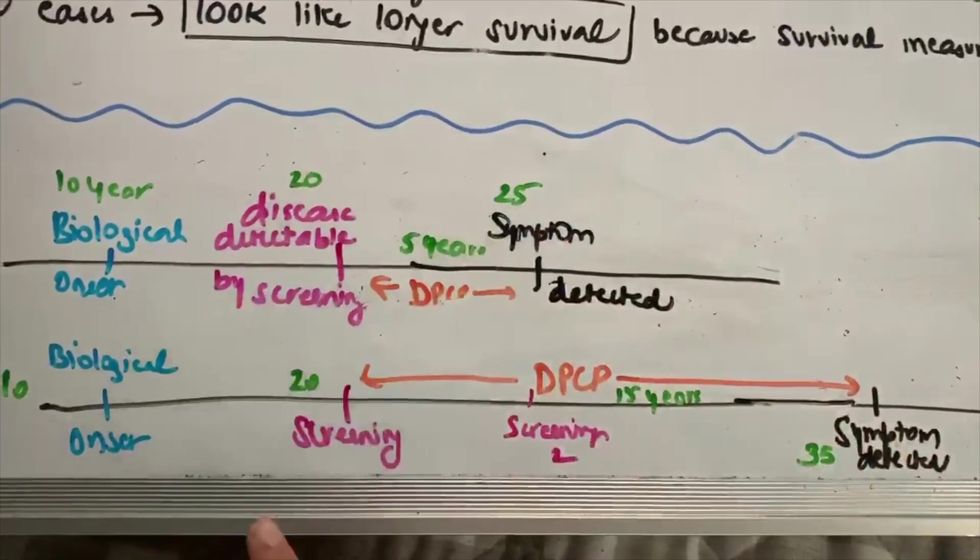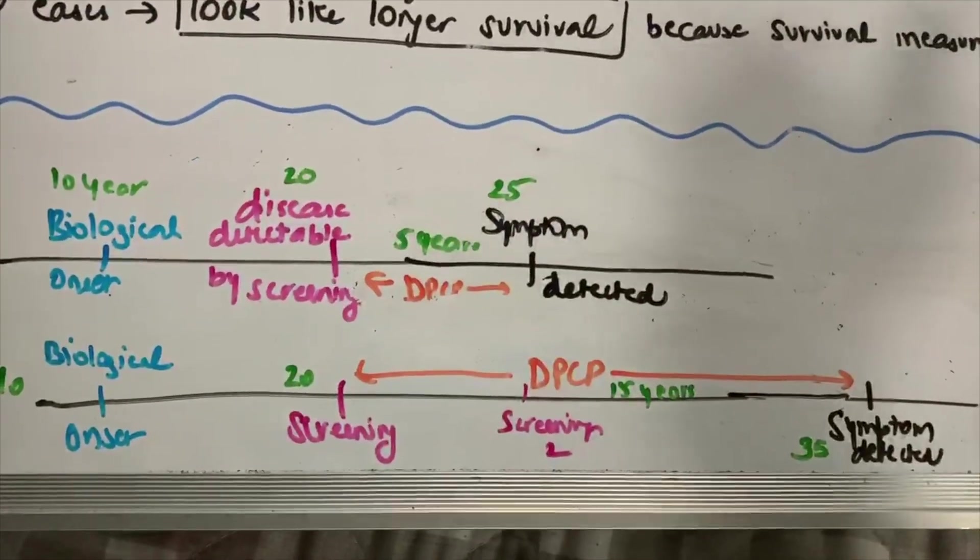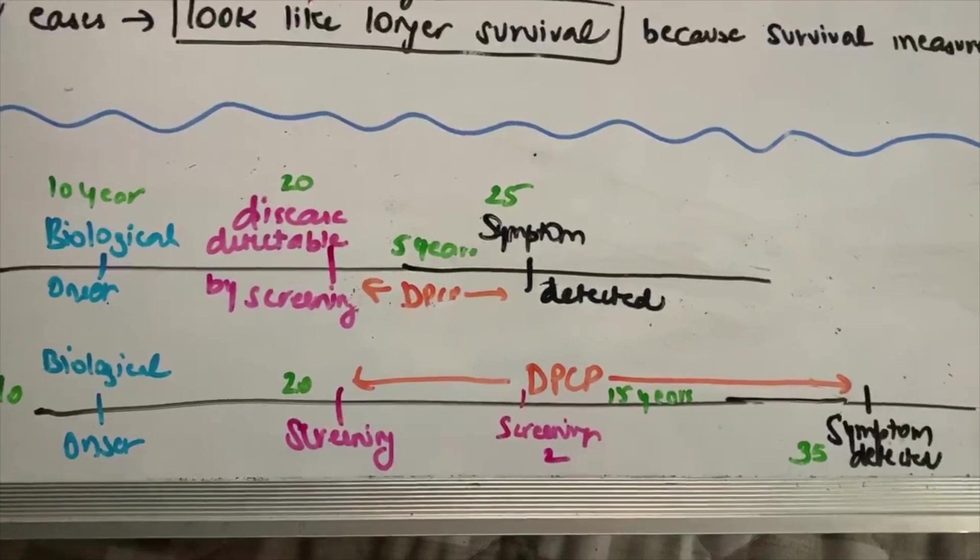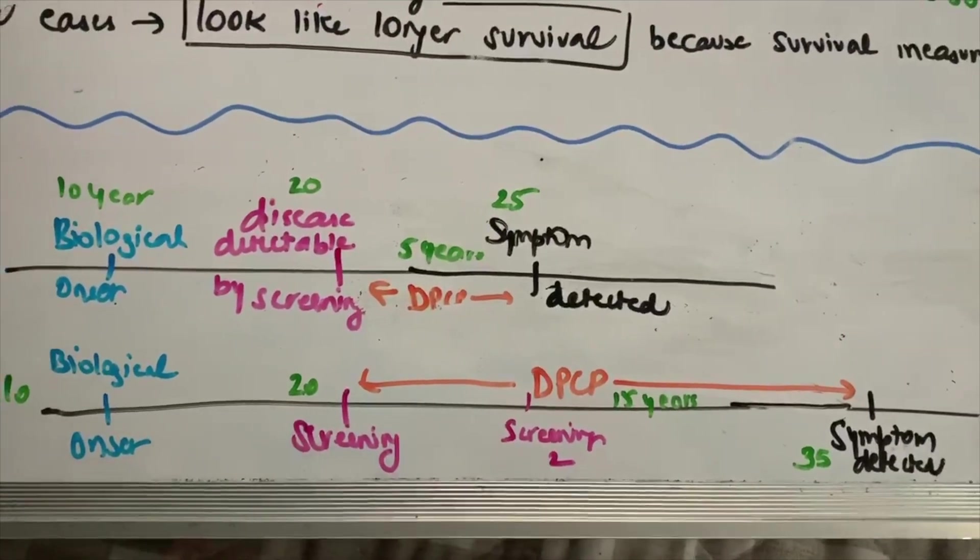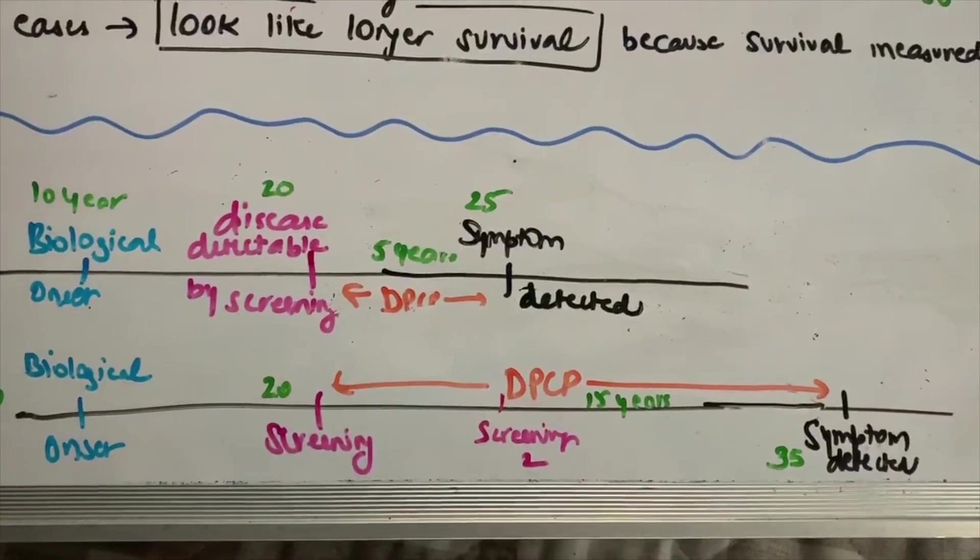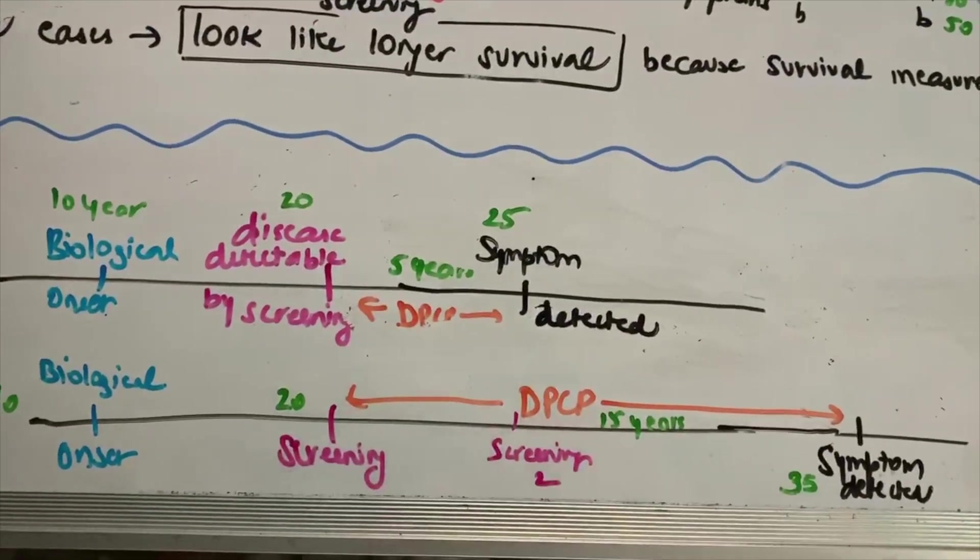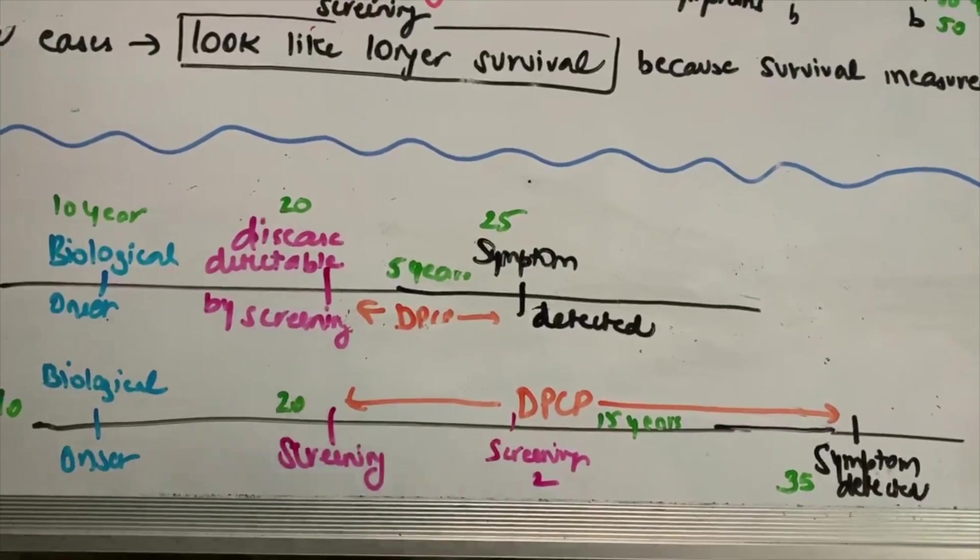As compared to these cases which are symptom-detected and have aggressive forms, so these are not included in the screening because the first time they get detected is through their symptoms. So length time bias is basically another way you can think that survival duration increases because of a screening test, but that's only because the test detects those cases which are benign as compared to those cases that are aggressive.